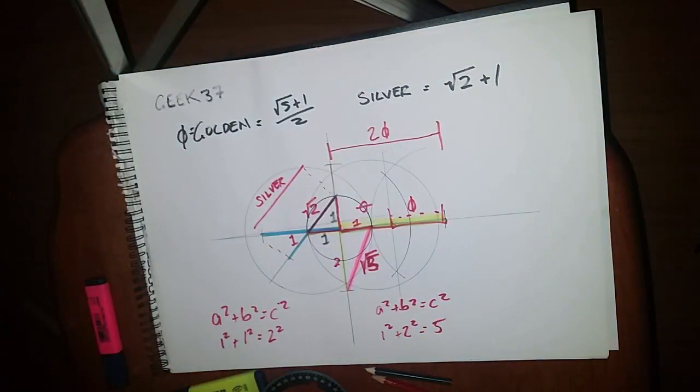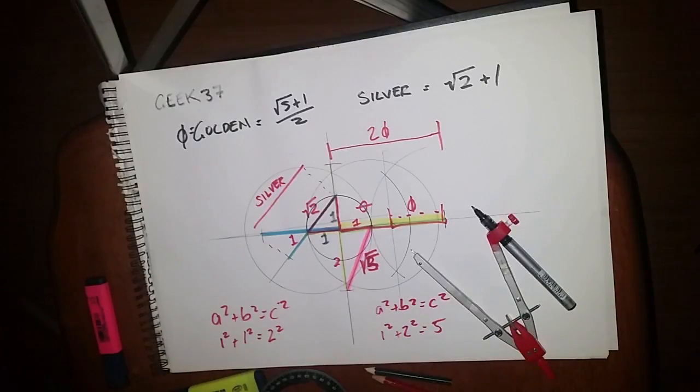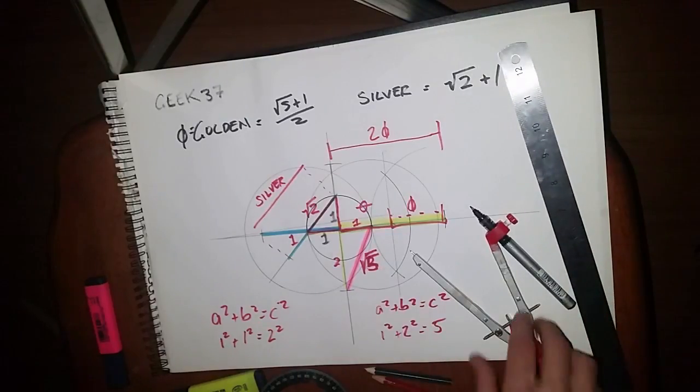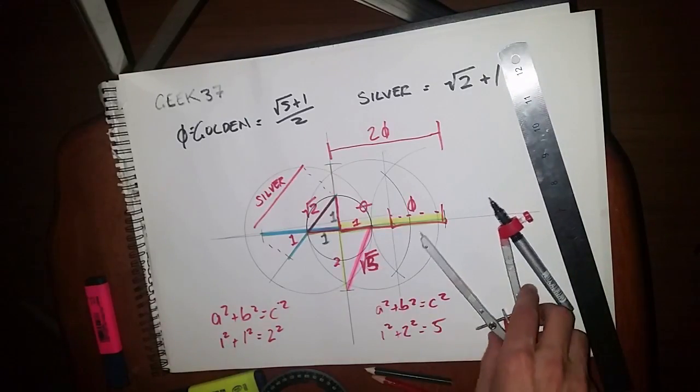Hello. I should have put this in the last video. I'll put the link to the previous video and some links to Geek37's channel because he talks about the golden, the silver ratio, as well as the bronze mean, which I should have really included all in the same video.